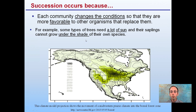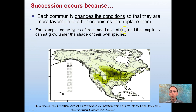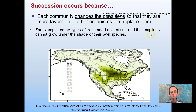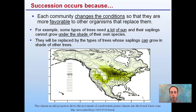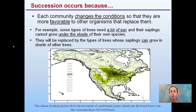If a tree needs a lot of sun, its saplings cannot grow in shade. This means that when the parent specimen is present, it will not be competing with its offspring. Those trees will then be replaced by types of trees whose saplings can grow under the shade of other trees. This helps determine what kind of species will be living there and how succession will progress.